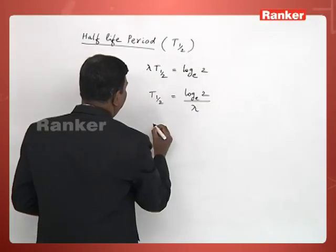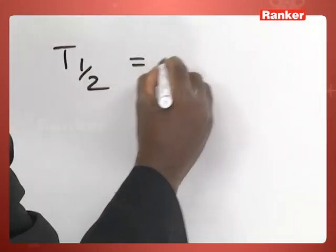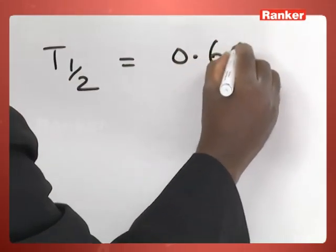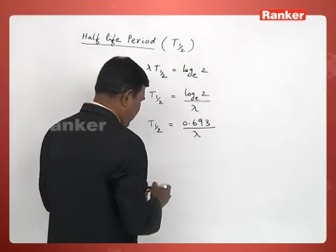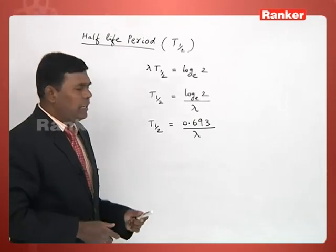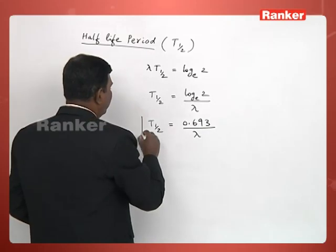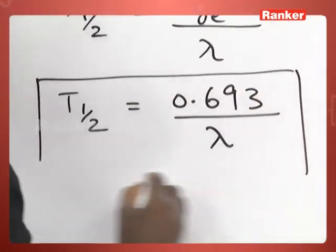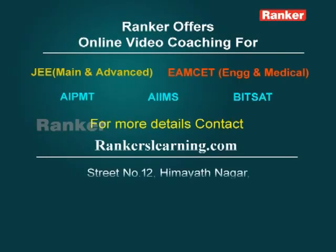The value of log e 2 is 0.693. Therefore, that becomes 0.693 divided by lambda. So, in this way, you can write expression for the half life period in terms of decay constant lambda. If you know the lambda value of any radioactive material, you can determine its half life period using that.